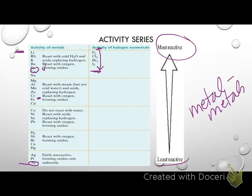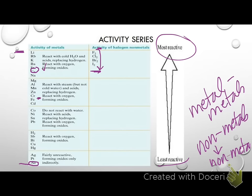Non-metals will only replace other non-metals because you still have to put a positive and a negative thing together. So metals will only replace metals. Non-metals will only replace non-metals with one exception, and that is hydrogen. Because we can react things with water and acids, some metals can actually replace the hydrogen and kick it out.